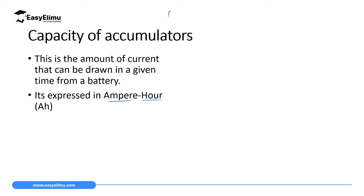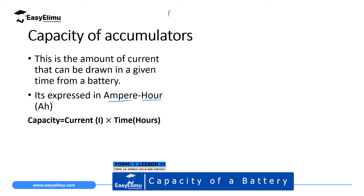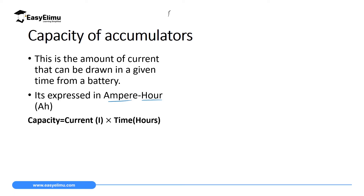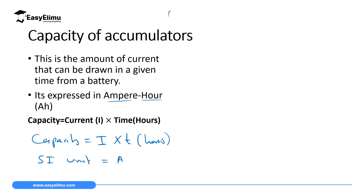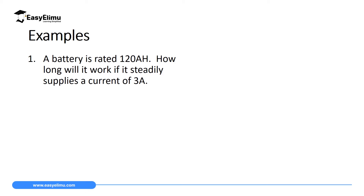Mathematically, since capacity does not have its own symbol, we write: Capacity = Current × Time, where C = I × t, and time is measured in hours. Therefore the SI unit of capacity is ampere-hour. Let's do a few questions to understand how to apply this equation.